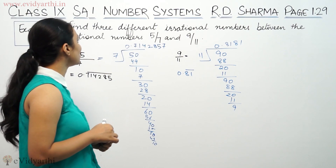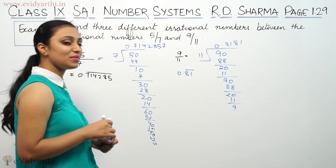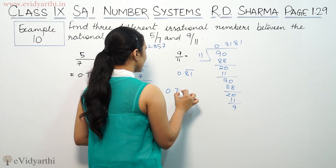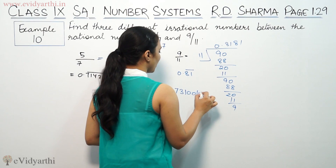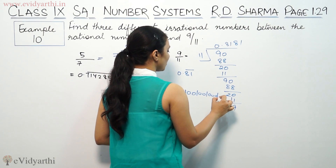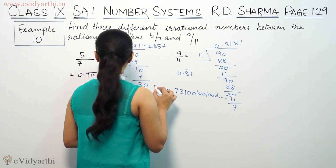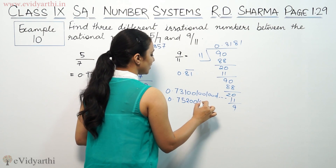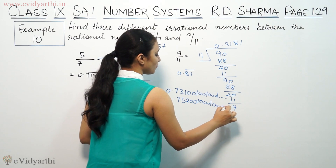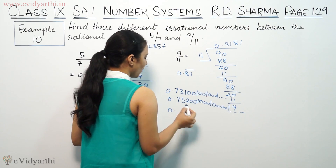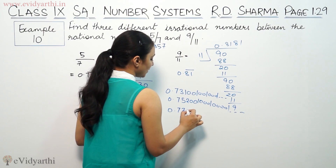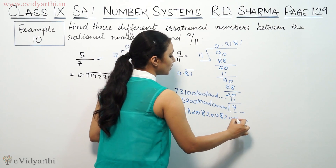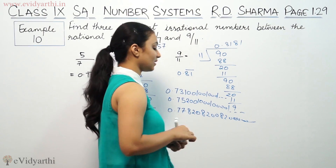Now we have 3 different irrational numbers to find between 0.714 and 0.81. We can write anything non-terminating and non-repeating between them. For example: 0.730100100 1001... and so on; 0.752001 00001... and so on; 0.7177820 8200... and so on. We can write any such number — we can choose freely.